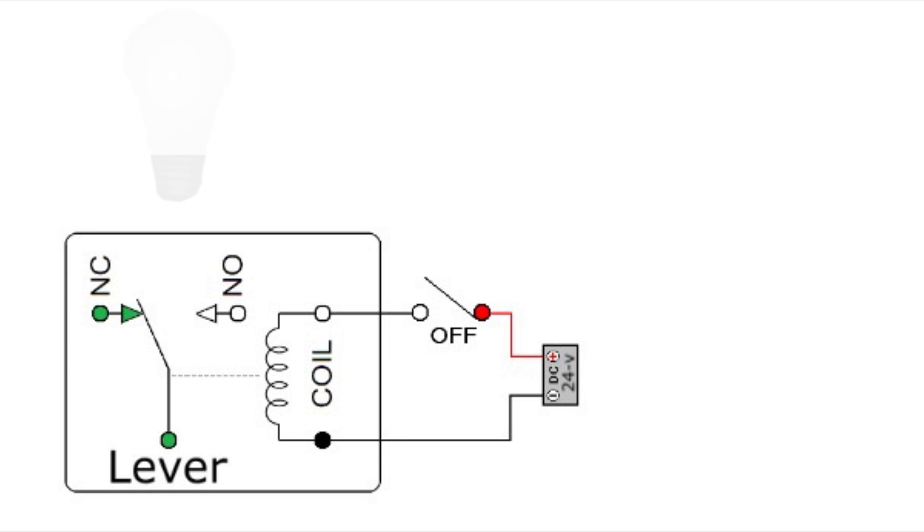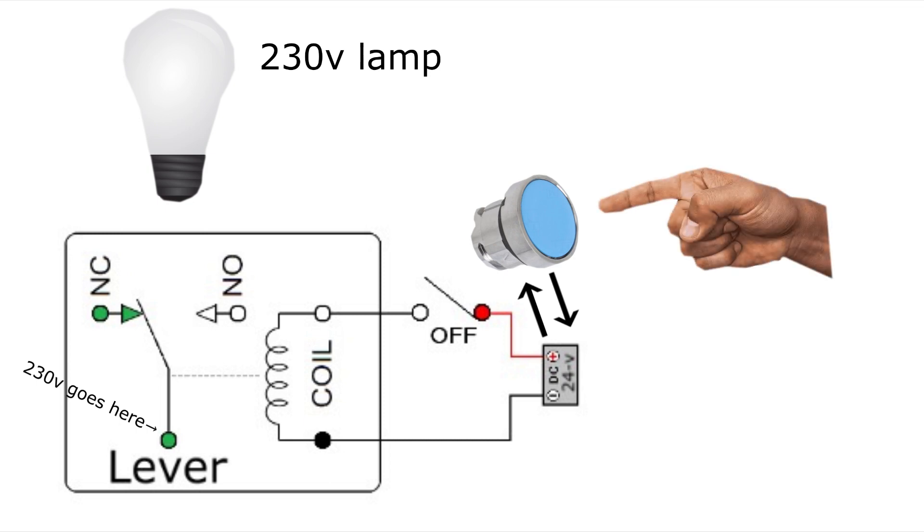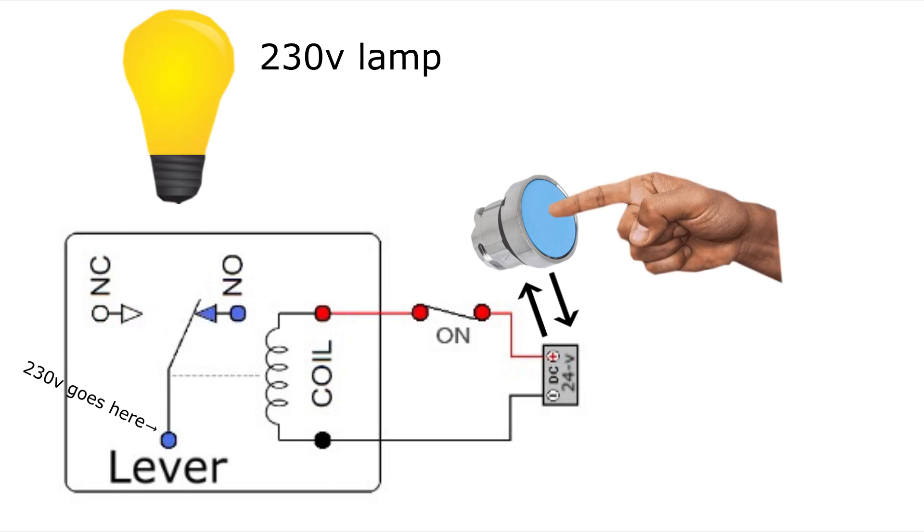To give an example, let's say we have a lamp that requires 230-voltage AC to turn on, but we don't want to use this high voltage on our button for potential dangerous electric shocks. Then we can wire up the needed voltage on the lever of the relay instead and keep just 24-voltage DC to the button. So now once we push the button, 24-voltage goes to the coil and makes the lever switch and lets the 230-voltage out to the lamp.